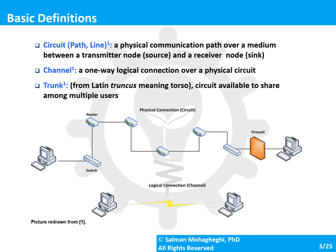Next, we have circuit and channel. A circuit, also known as a path or a line, is a physical communication path that connects a source node to a sink node, or a transmitter to a receiver. For example, two devices communicate through a circuit that consists of a switch, multiple routers, another switch, and a firewall, along with the physical links connecting these devices.